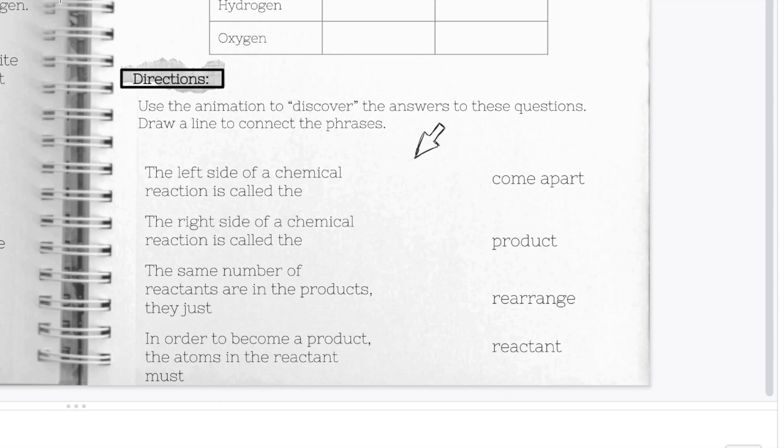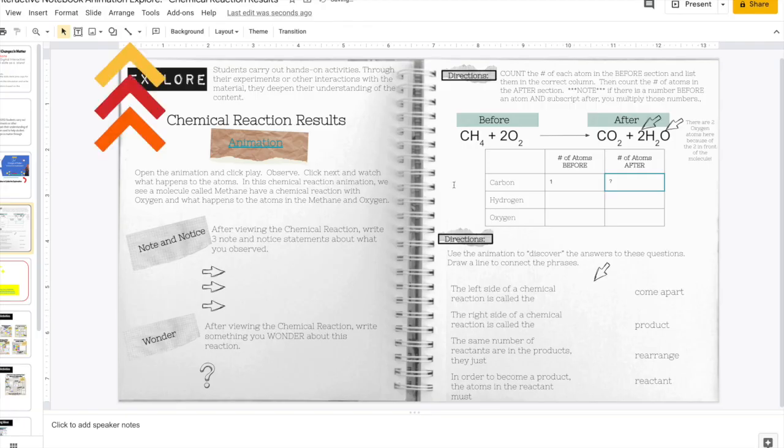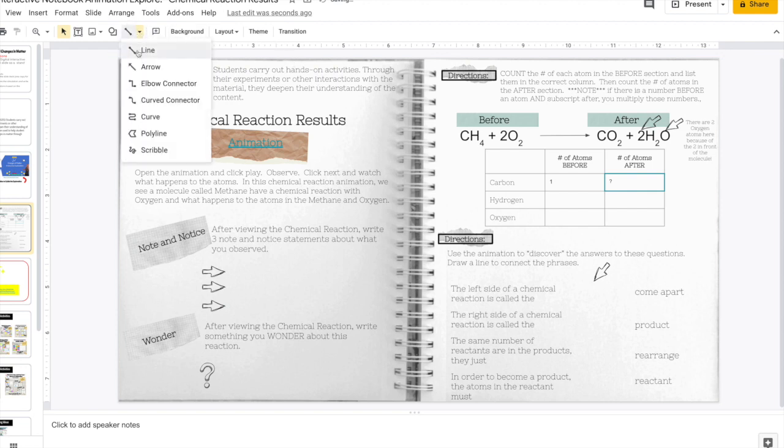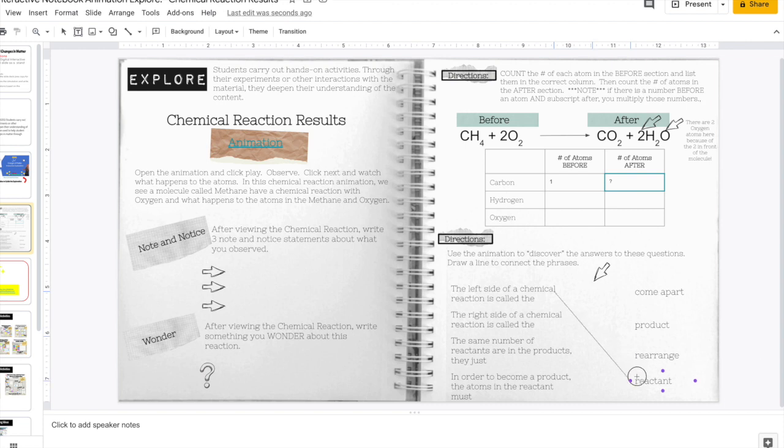This is a matching section. So as you look at each question in the matching section, it says to use the animation to help you find the correct match and draw a line from the question to the correct answer. To draw your line, use the line tool here and just drag to draw a line from the question to the correct answer.